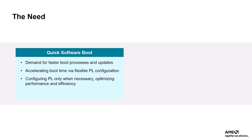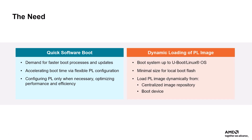By keeping the PL domain inactive until required, power is conserved and overall system effectiveness is improved. The other use case is when the dynamic loading of the PL happens remotely. Here, the system can swiftly boot up to U-Boot or Linux by using local boot flash, which minimizes storage needs while enhancing flexibility. Subsequently, the PL image can be dynamically reloaded from a centralized image repository or directly from the boot device. This ensures that the system always operates with the most current configurations, adapting seamlessly to the ever-changing needs of modern technology.